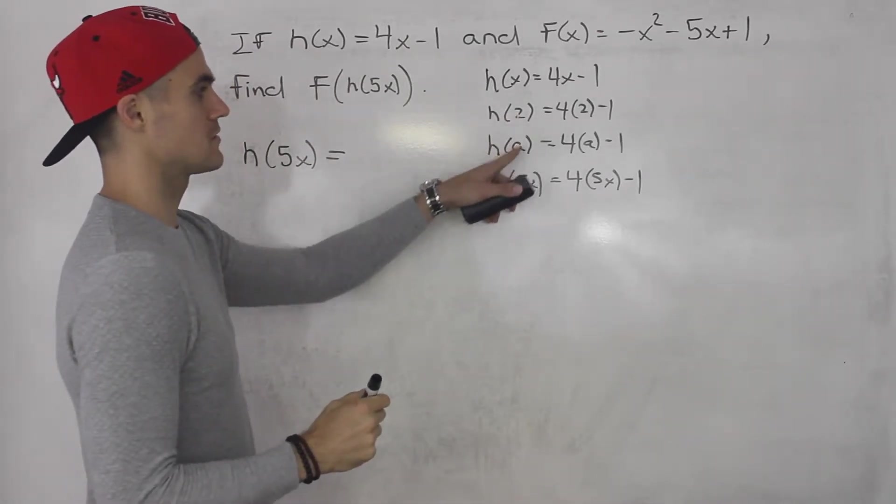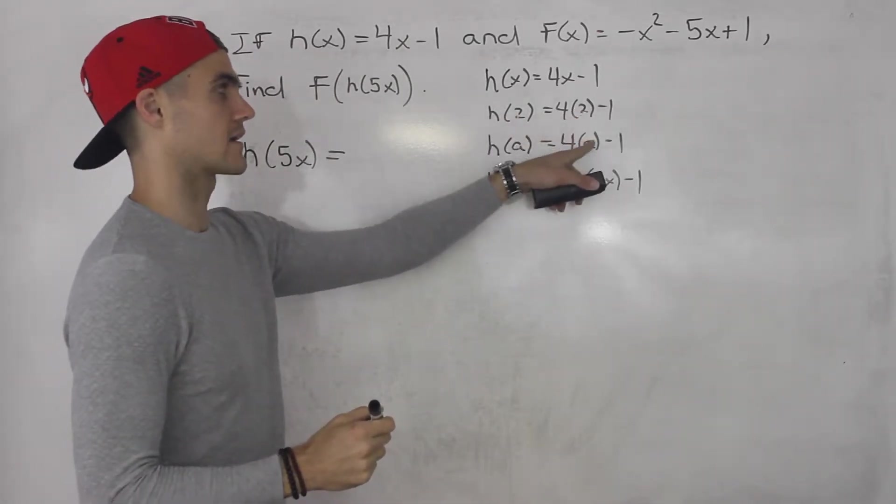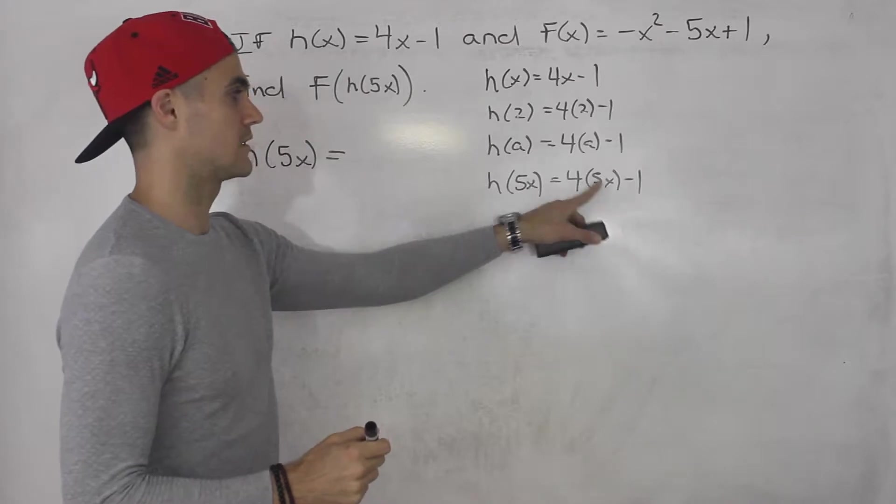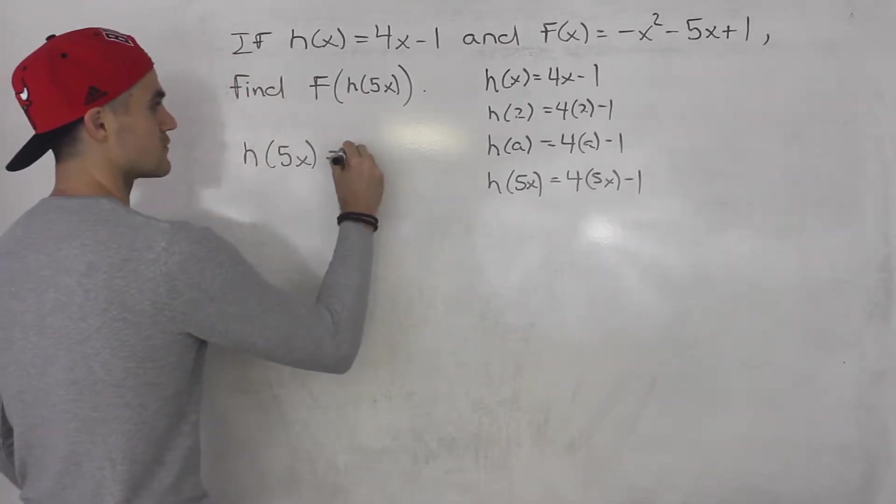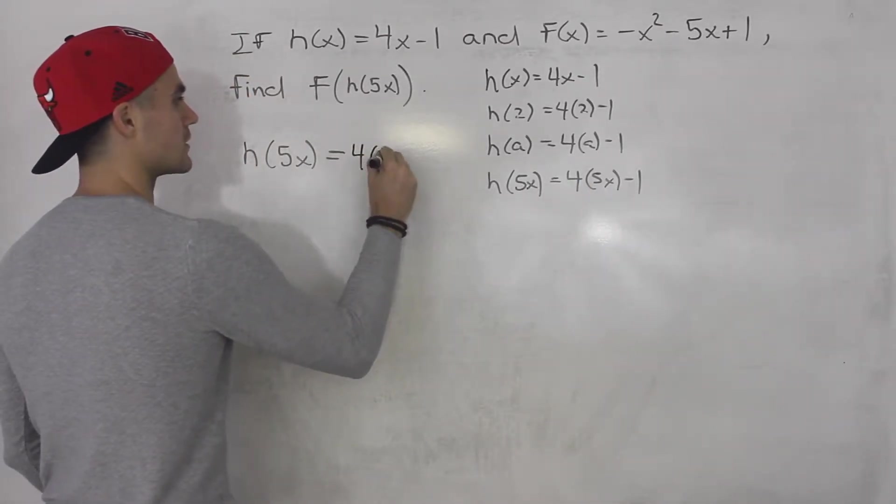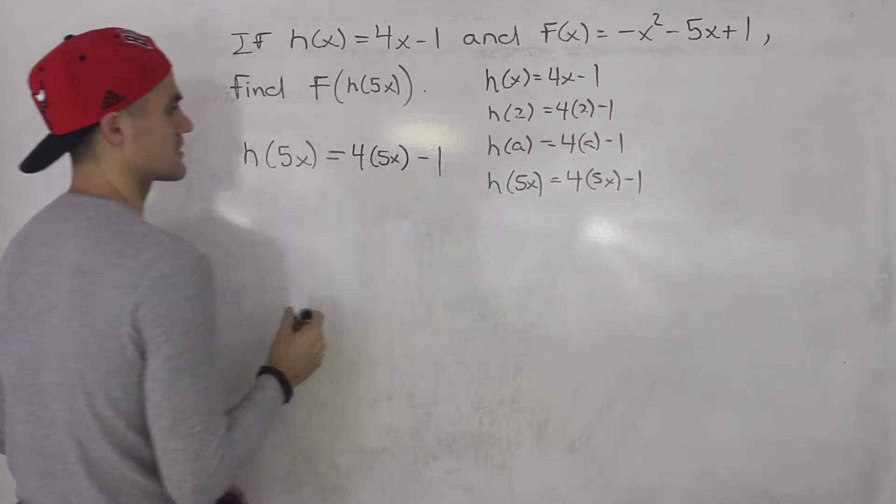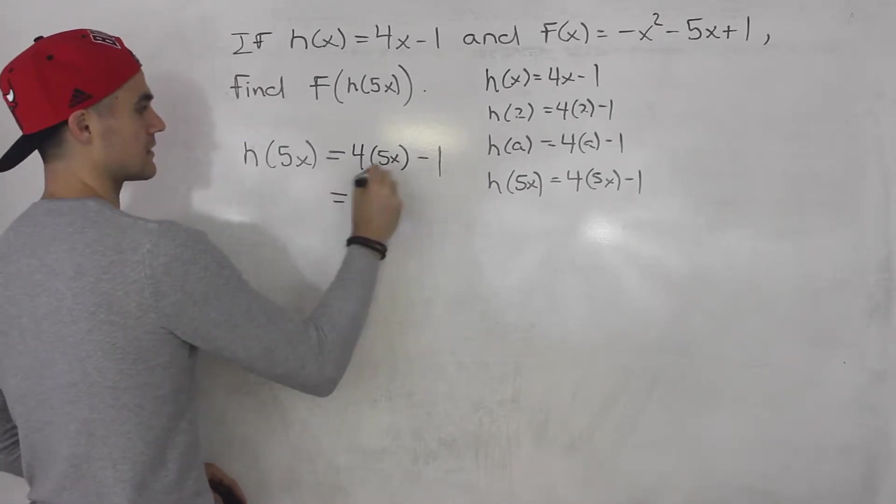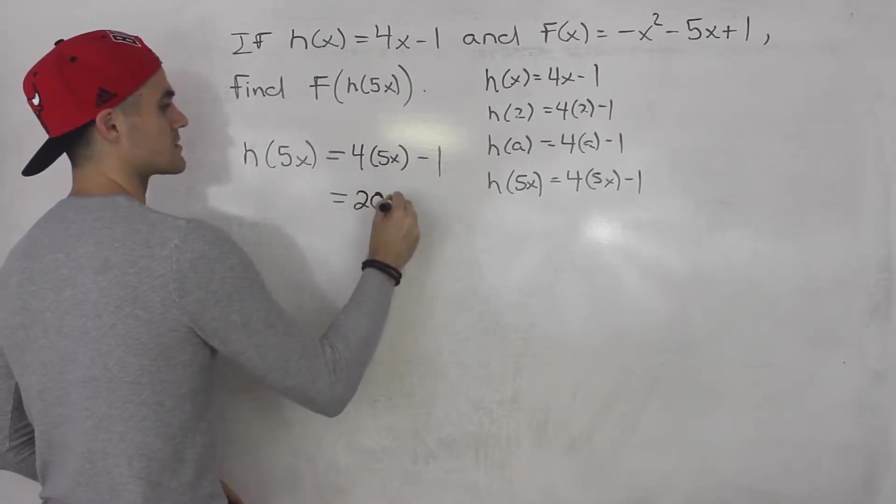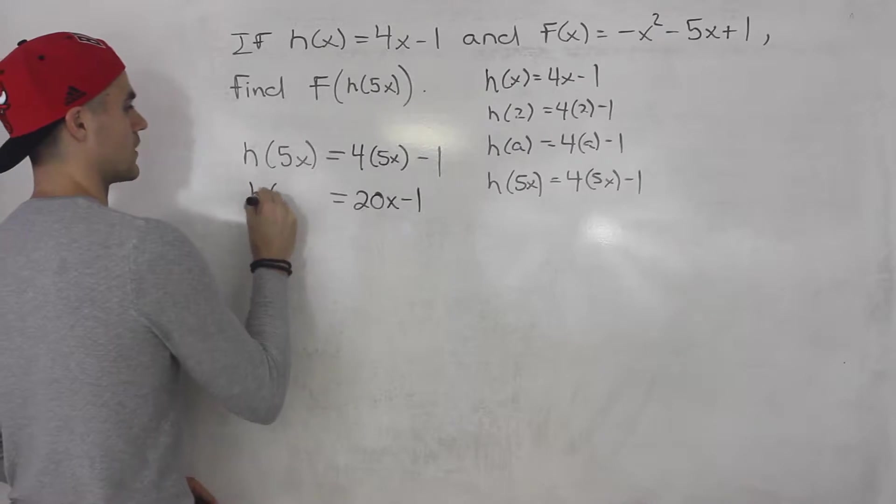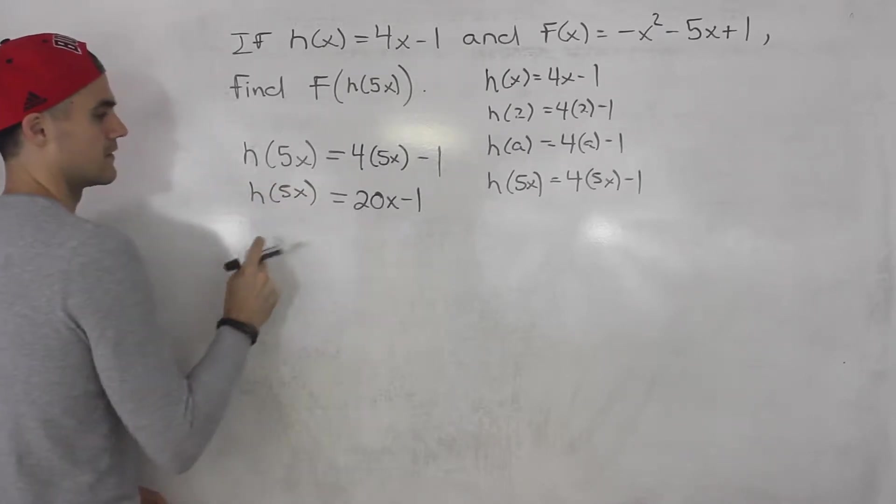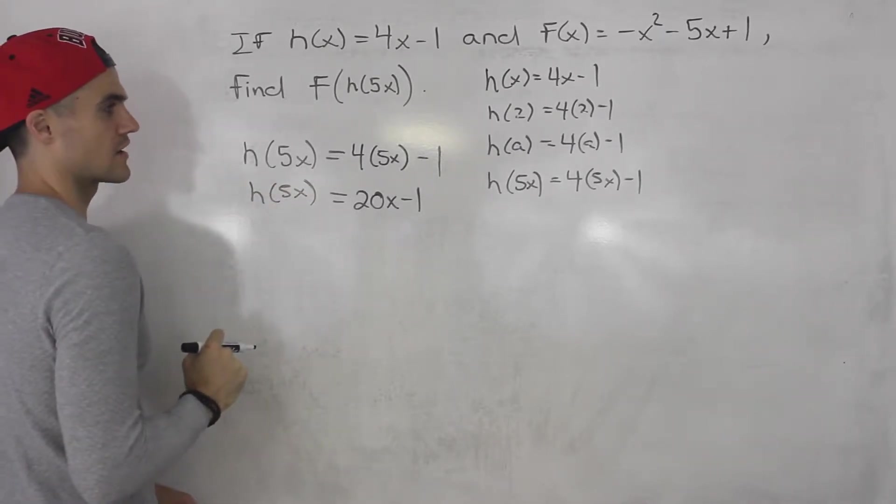So h(5x), we're plugging in 5x for that entire x value there. So 4 bracket 5x minus 1. So basically, whatever's here, we're always plugging in for the x value in the bracket. So h(5x) is 4 bracket 5x minus 1, or sorry, the 5x is in brackets itself, and the minus 1 is outside. So basically, this ends up being 20x - 1. That's what h(5x) is.